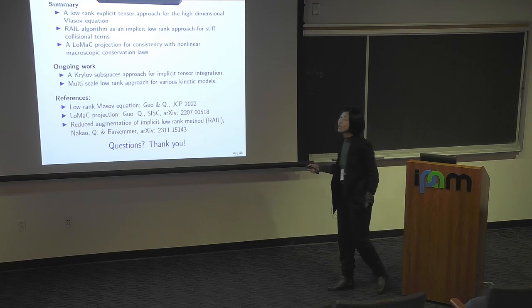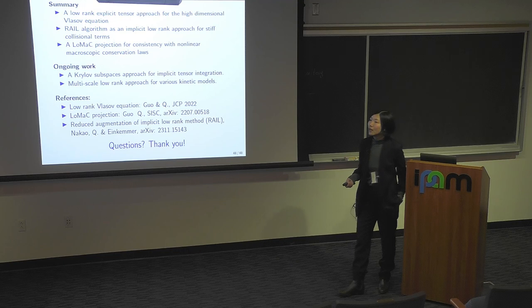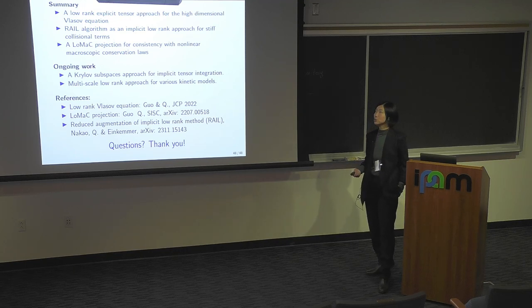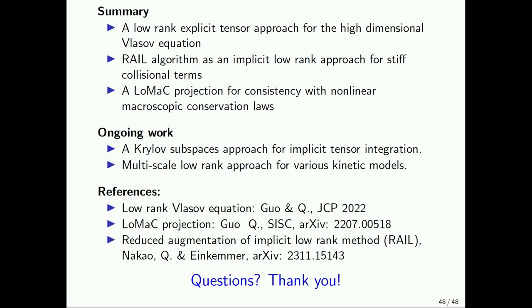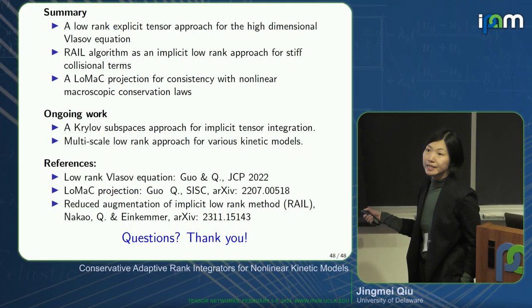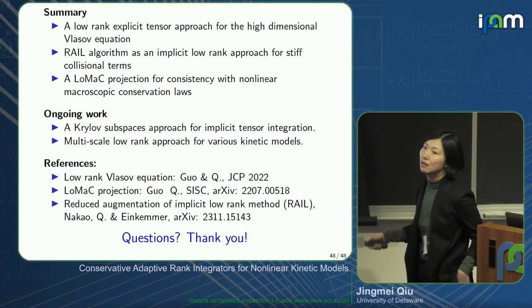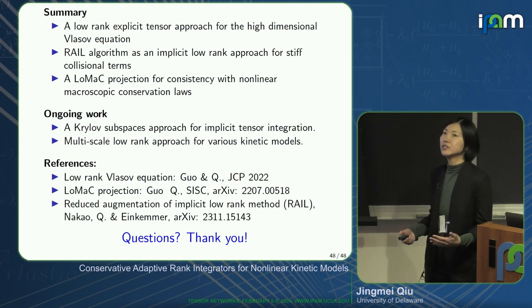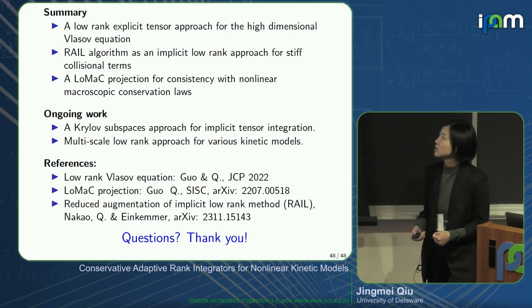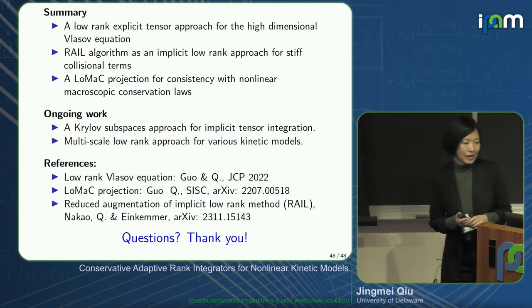In summary, we have discussed how to speed up traditional grid-based methods by inserting low-rank or adaptive rank assumptions into the numerical scheme, covering explicit schemes, implicit schemes, IMEX schemes, and macroscopic conservation law preservation. Ongoing work with PhD student Hamad and collaborators at Los Alamos involves developing Krylov subspace approaches for implicit tensor integrations and, in a broader context of multiscale plasma simulations, inserting low-rank assumptions to speed up traditional multiscale solvers. Thank you.